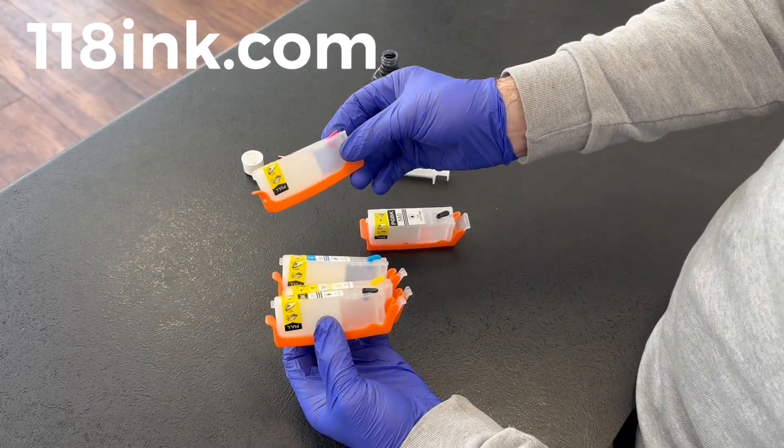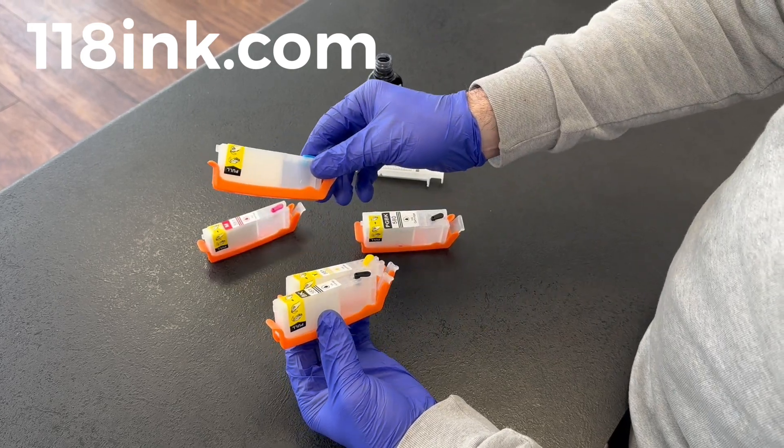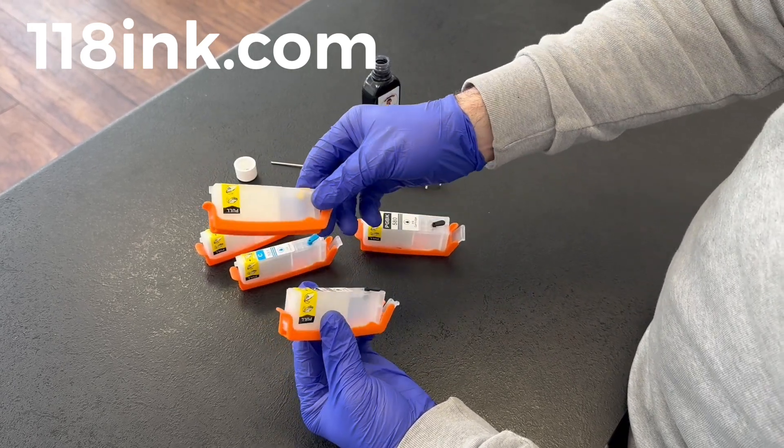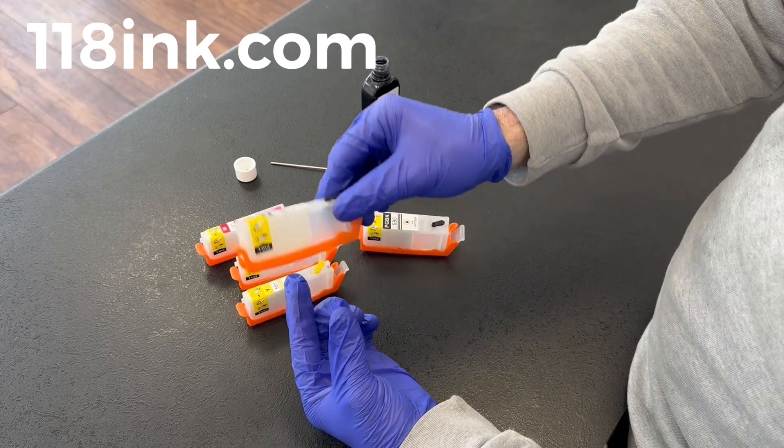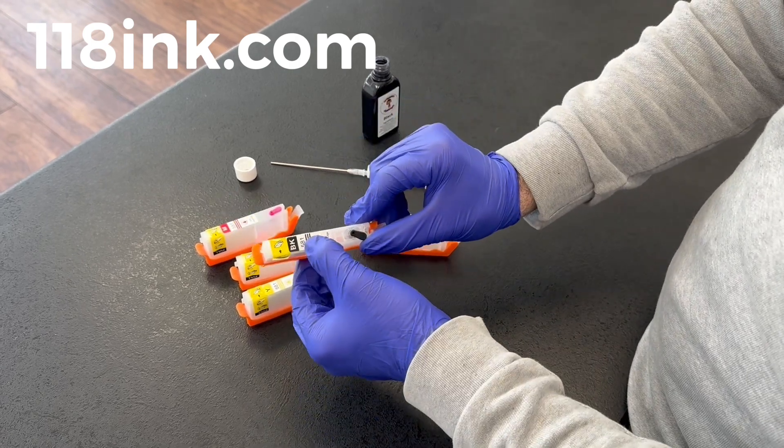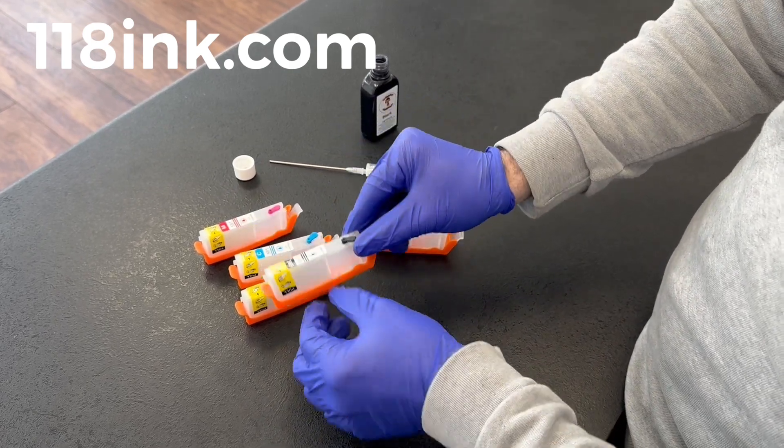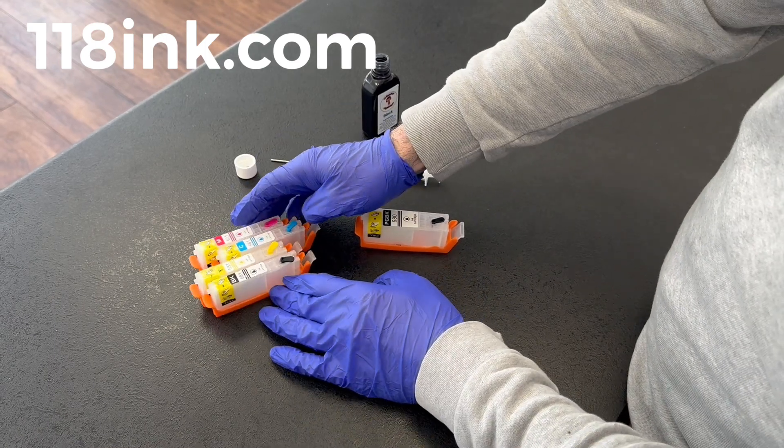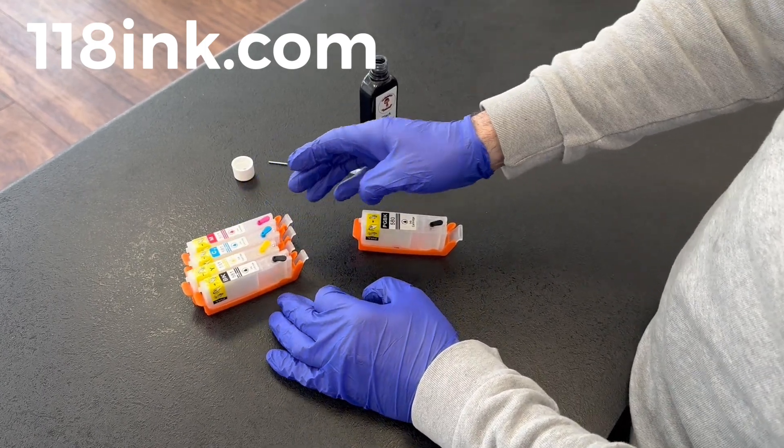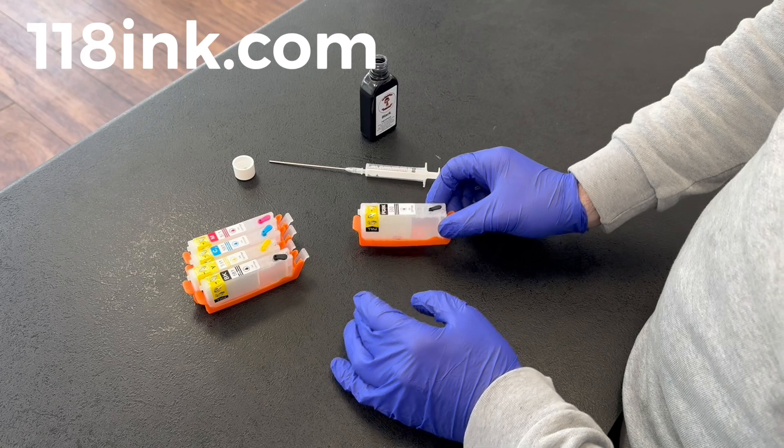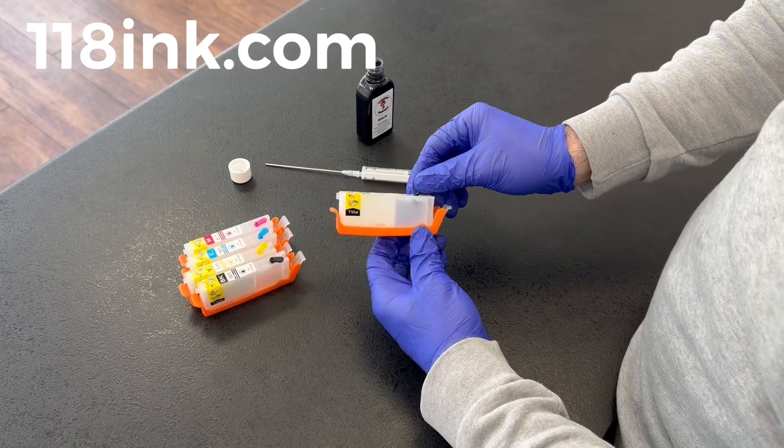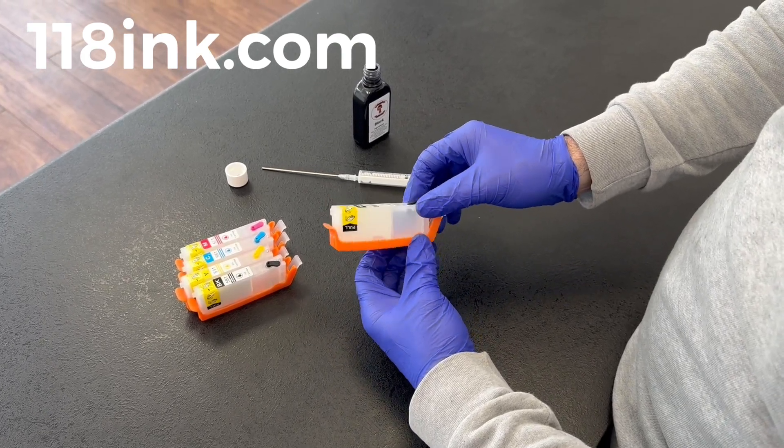So the magenta takes 10 mils, the cyan takes 10 mils, the yellow takes 10 mils, and the little black which is the 581 black takes 10 mils. So basically all of the smaller cartridges out of the set take 10 mils and the large cartridge takes 20 mils simply because it's double the size.